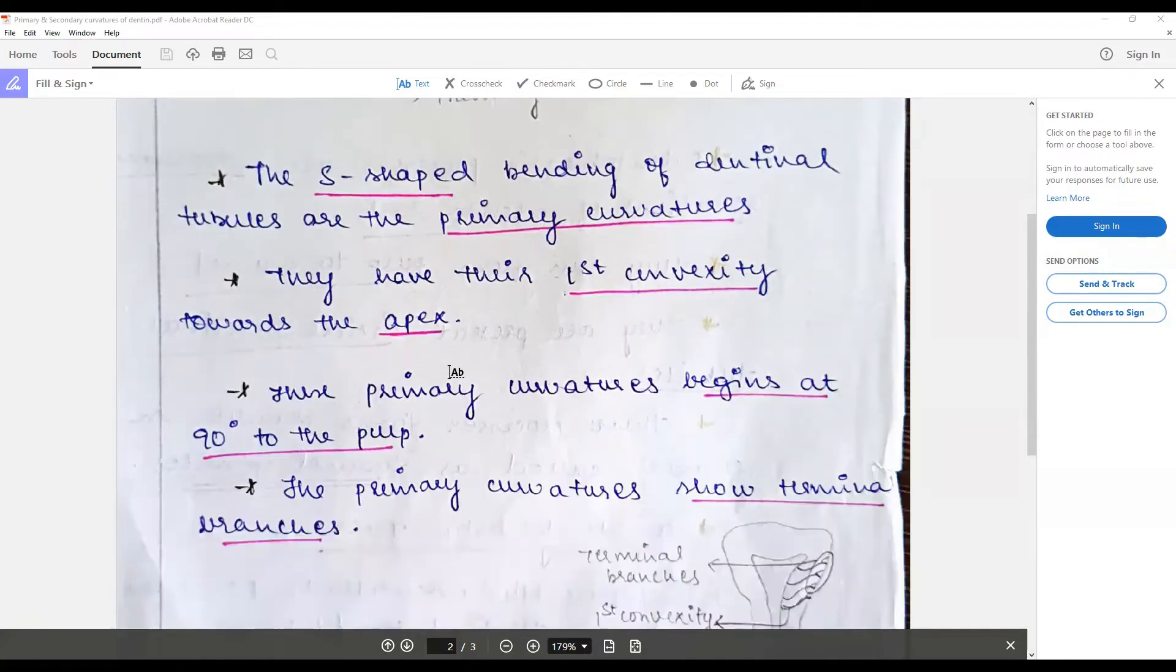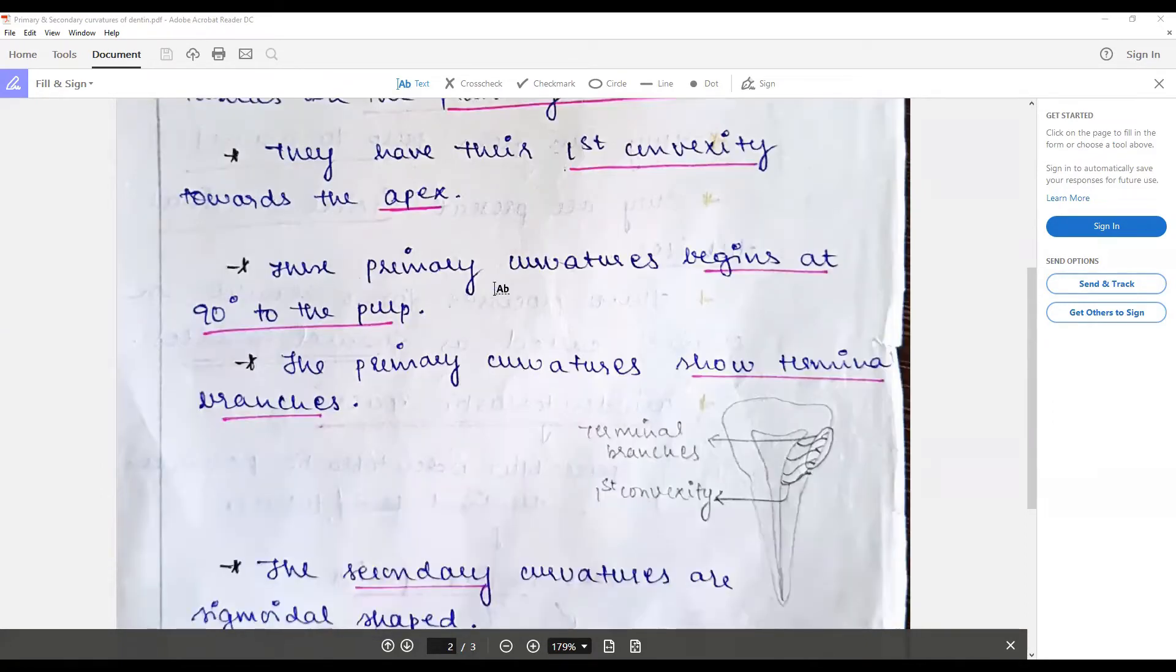The primary curvatures are in the initial phases, and their first convexity, that is the first convexity of S, is the primary curvature towards the apex. They begin at 90 degrees to the pulp and have short terminal branches.